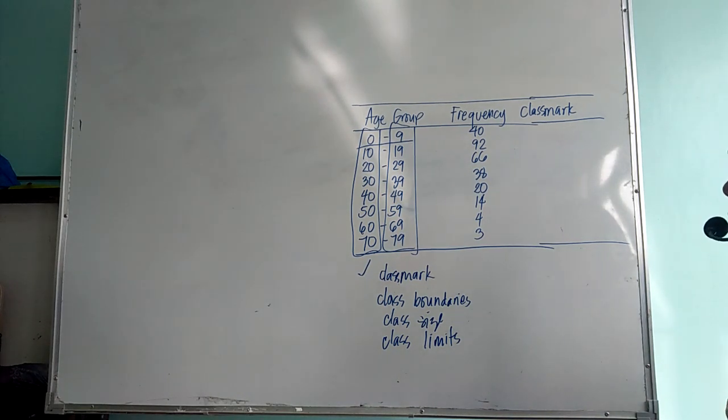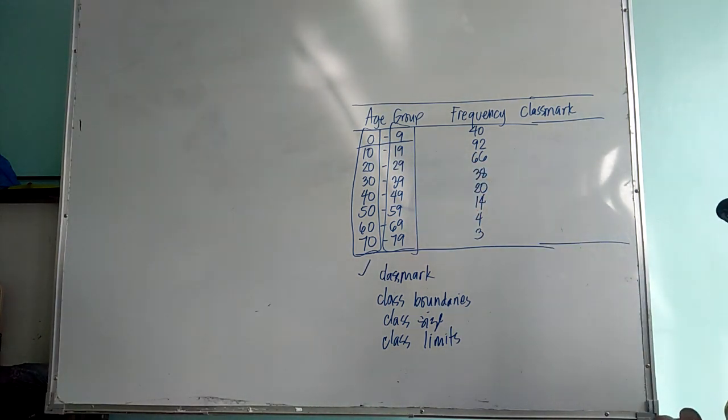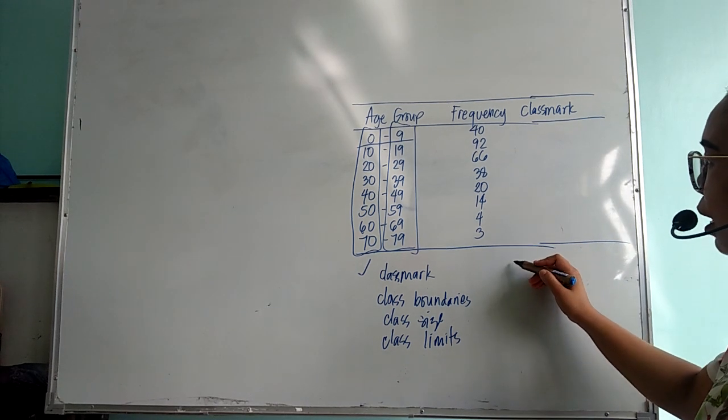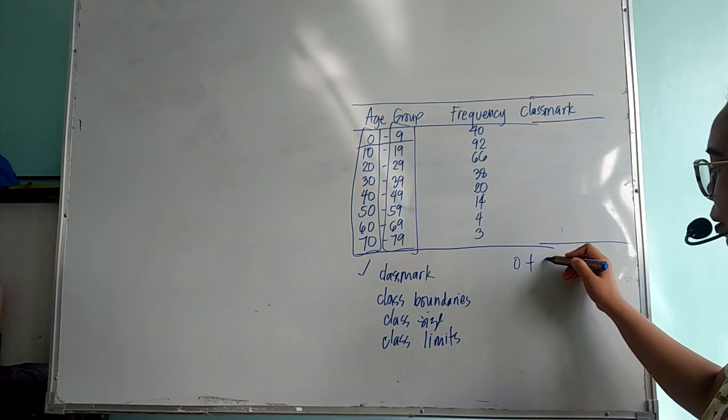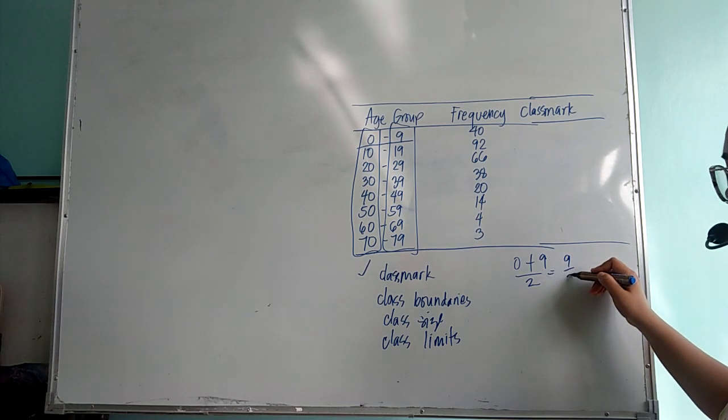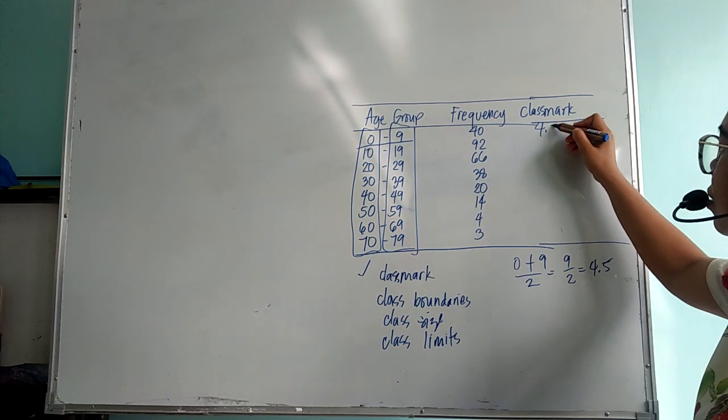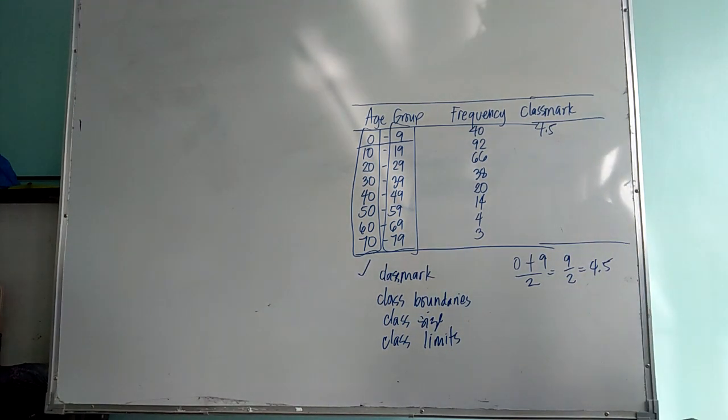To get the average of the interval, simply add the lower limit and the upper limit and divide it by 2. So therefore we have zero plus nine divided by 2. So we have nine divided by 2 which is 4.5. So this is 4.5.